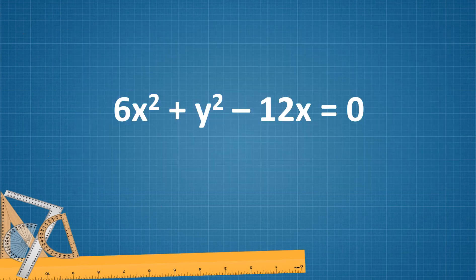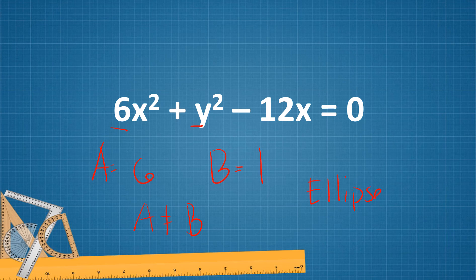Let's try another example: 6x squared plus y squared minus 12x equals 0. A is the numerical coefficient of x squared, which is 6. B is the numerical coefficient of y squared, and there is an invisible coefficient of 1. Since A and B are not equal and both positive, this is an ellipse. Since 1 is the lower value and it is the numerical coefficient of y squared, the orientation is vertical.